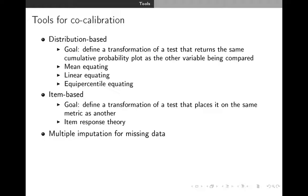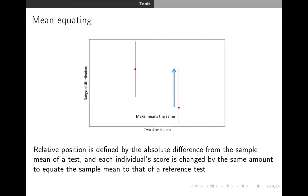Let's talk about some tools for co-calibration. I'll cover distribution-based tools, item-based tools, and multiple imputation for missing data. The goal of a distribution-based tool is to define a transformation of a test that returns the same cumulative probability plot as the other variable in another dataset being compared. There are three tools: straightforward mean equating, linear equating, and equi-percentile equating.